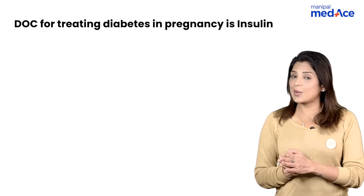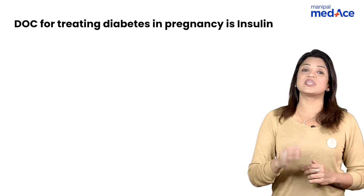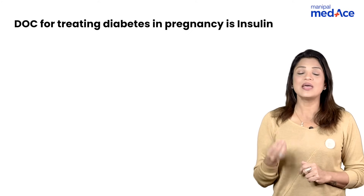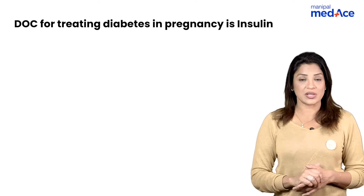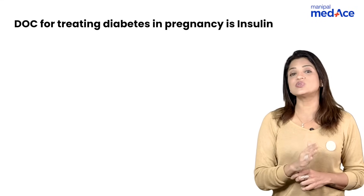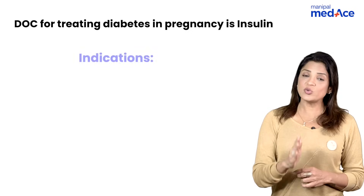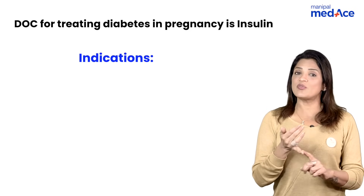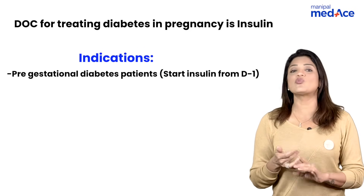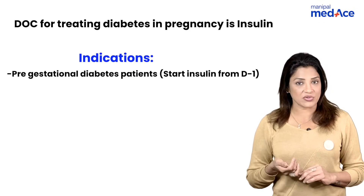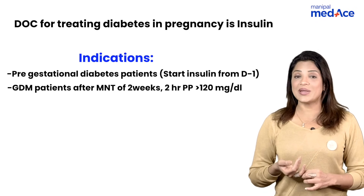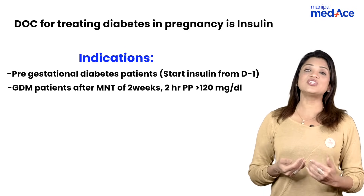When do we start insulin? Insulin is the drug of choice. We do not give oral hypoglycemics because they can cross the placenta and cause hypoglycemia in the fetus; moreover, they are not as effective as insulin. Apart from metformin and glibenclamide, we do not use any oral hypoglycemics. In patients with overt pre-gestational diabetes, there is no role for oral hypoglycemic drugs.